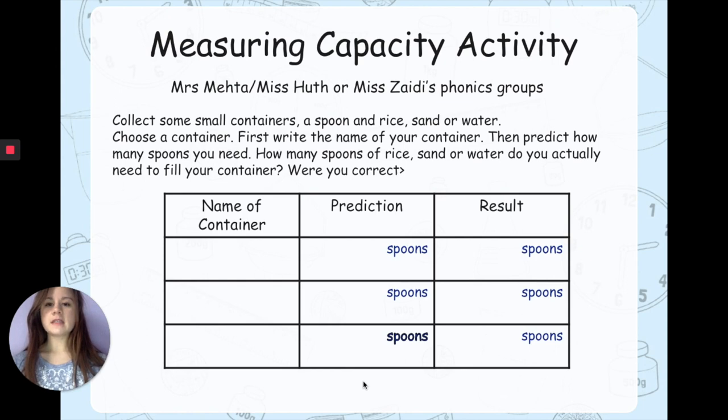If you are in Mrs. Metter or Miss Huth's phonics or Miss Sadie's phonics groups, you can get your containers, your spoon, your rice, sand or water as well. Choose your first container and write the name of the container in the box. And then you are going to make a prediction. Remember prediction means a guess. So you are going to see how big the container is and guess how many spoons you will need. Then you can write it down in the prediction part here. And then you are going to put your spoons of rice, sand or water into the container and see if you are correct. How many spoons did you really need to fill your container? Were you correct?